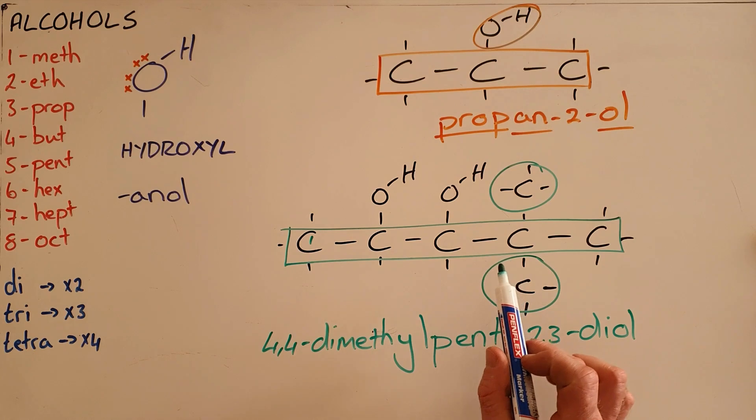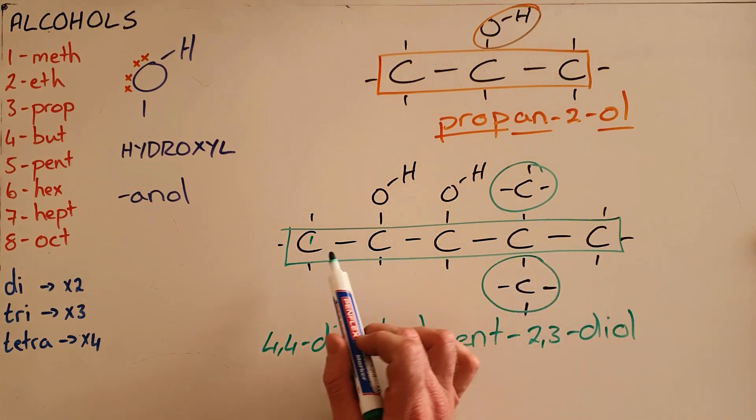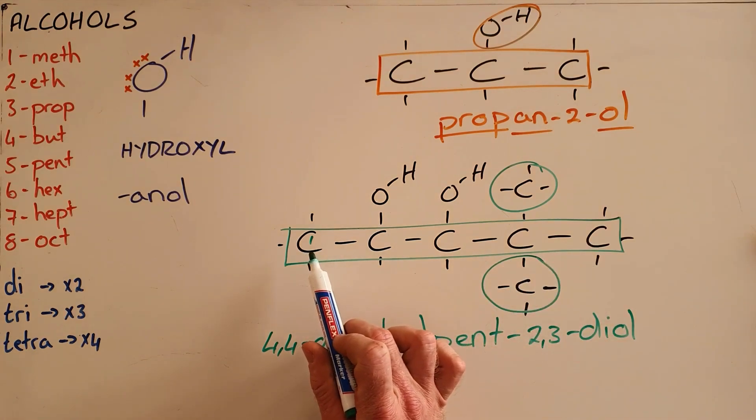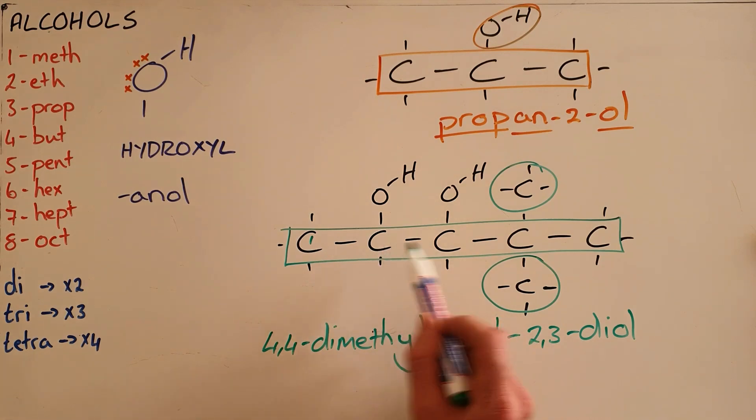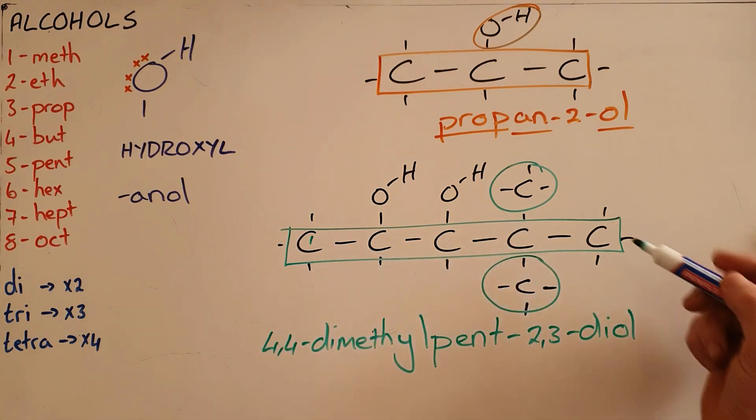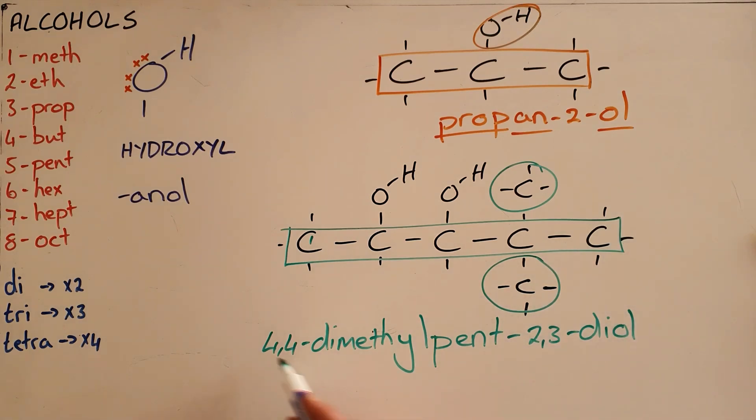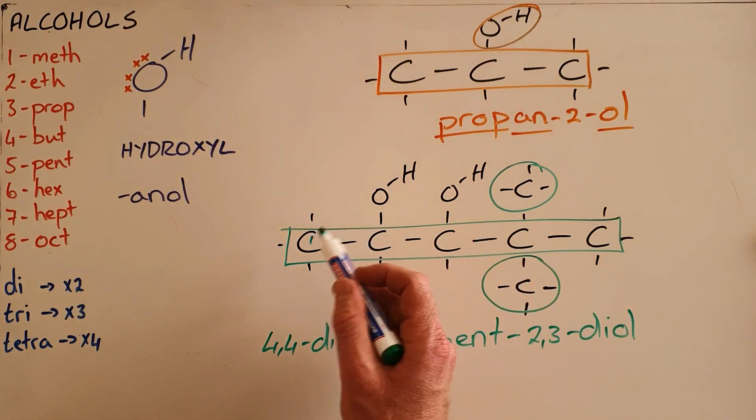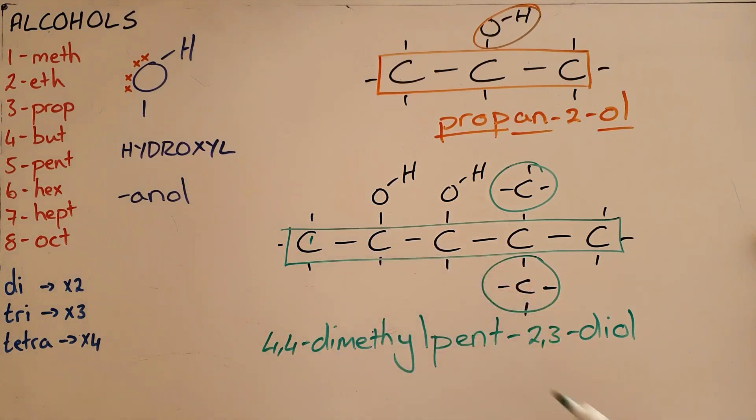Important to note here that we always number an alcohol so that the hydroxyl groups are the smallest possible number. We know that technically by numbering this as carbon number one the total number would have been smaller, but we have to number from the side closest to the hydroxyl functional group when it is an alcohol.